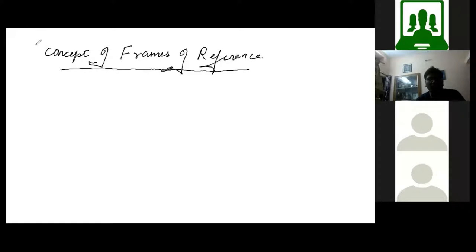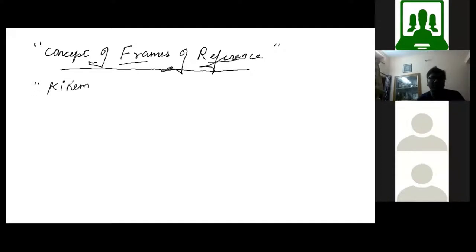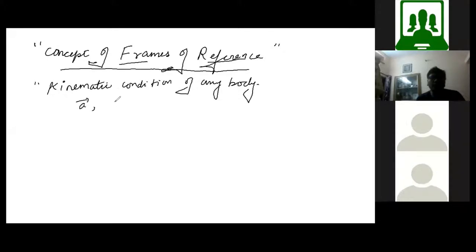Let's start with the concepts of the Frame of Reference. I am teaching this topic because it is the most important topic of physics. To study physics you need a set of rules, and the concepts of physics are based on that set of rules. The fundamental rule among them is the concept of Frame of Reference. If somebody asks what the Frame of Reference is, it is the kinematic condition of anybody. That means you want to find whether a body is doing some acceleration, whether it is moving with a constant velocity, or whether it is at rest. What kind of rules you apply in these three conditions is defined by the concept of the Frame of Reference.